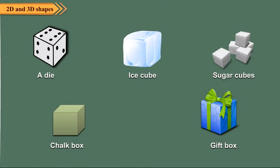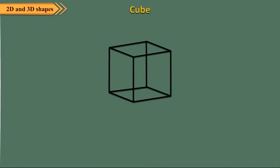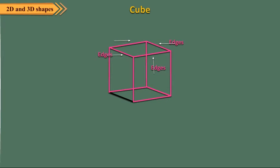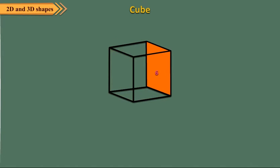Look at the shapes of objects shown here. All these objects have the shape of a cube. The die with which you play is a cube. A cube has eight vertices, twelve edges and six faces.